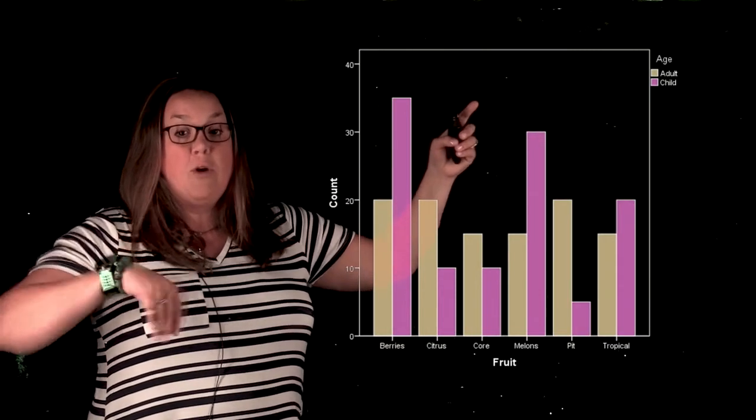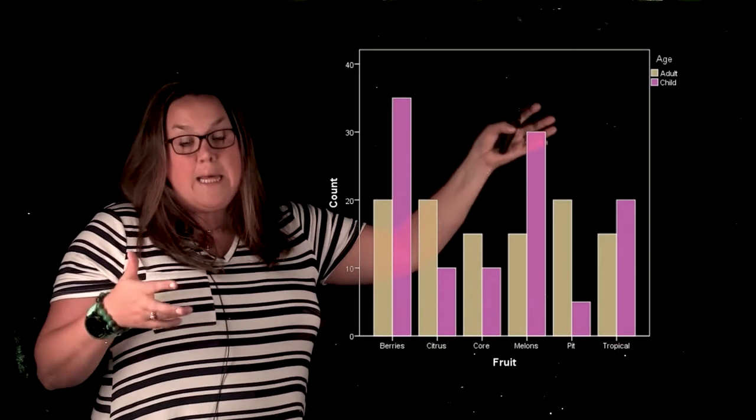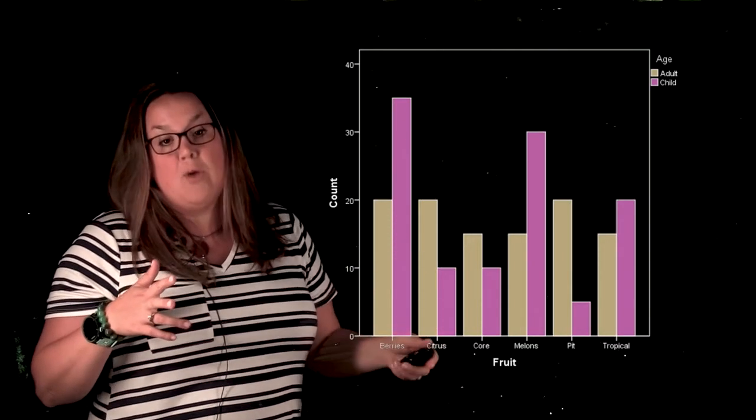Remember an explanatory variable does the explaining. So we would say here that age is going to explain the favorite fruit that you have.